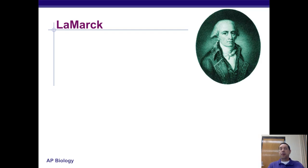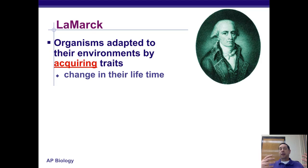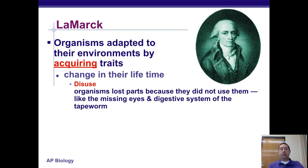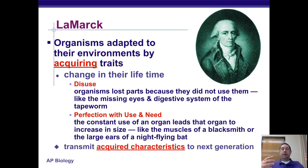One of the first theories ever proposed was by a scientist named Lamarck. He suggested that organisms adapted to their environment by acquiring traits — basically, living things changed during their lifetime. Through disuse, organisms would lose parts, like the missing eyes of the blind cave fish or the digestive system of tapeworms. Or through use and need, the constant use of an organ caused it to increase in size, like the muscles of a blacksmith or the large ears of a night-flying bat. These acquired traits would then be transmitted to the next generation.